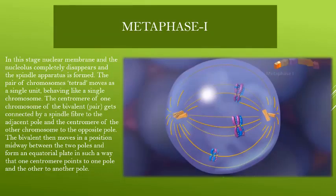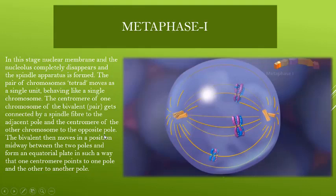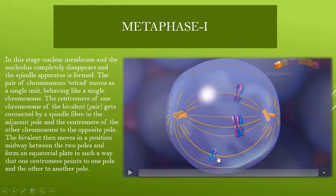The next stage is Metaphase 1. The nucleolus completely disappears and the spindle apparatus forms. Centrioles have moved to their respective poles — you can see that both are at their poles and spindle fibers are evident. The metaphase plate forms as the homologous chromosomes move as a single unit towards the equator. One pair connects to the spindle fibers of one pole, and the other pair connects to the spindle fibers of the other pole.